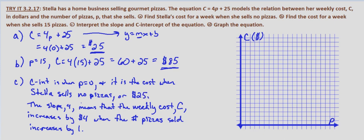The slope 4 is rise over run — the change in cost for every one unit of change in pizzas — meaning the cost increases by $4 when the number of pizzas sold increases by 1. Now we're asked to graph the equation C equals 4P plus 25. We already determined that the C-intercept is 25.